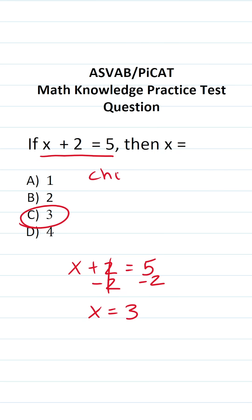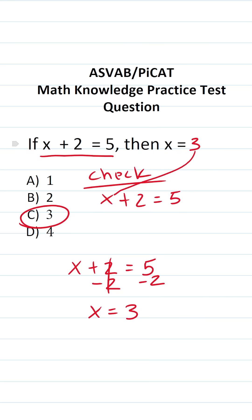Now, if you're not confident that you solved it correctly, we know that x equals 3. We can plug that value back into the original equation, and if it makes a true mathematical statement, we know we did it correctly. So plug in 3 here — this becomes 3 plus 2 equals 5. Does 5 equal 5? That is a true statement, so I'm confident that C is the correct answer.